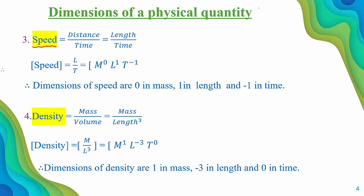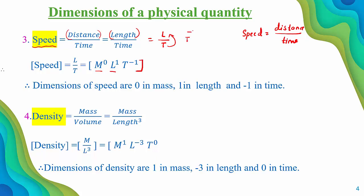The third example is speed. Speed is the rate of change of distance: distance divided by time. Distance and length are equivalent, so speed equals length divided by time. There is no mass here, so mass is M⁰. The dimensions of speed are M⁰L¹T⁻¹ — that is, 0 in mass, 1 in length, and −1 in time.